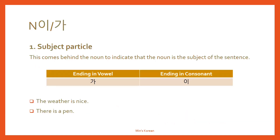And the next one: 이/가. 이/가 is a subject particle. After a subject noun, you can use this 이/가 particle. It comes behind the noun to indicate that the noun is the subject of the sentence. Ending in a vowel, 가. And ending in a consonant, 이.